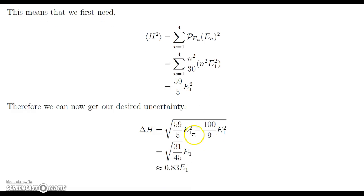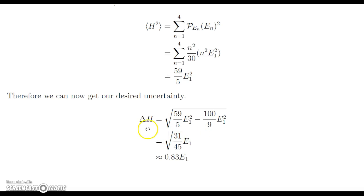Now that we have both these values, we can get our desired uncertainty, which is that the uncertainty is equal to the square root of 59 fifths E1 squared minus 100 ninths E1 squared. We can bring the E1 squared out, factor that out, and get an E1. And then when we collect terms here, we get that the uncertainty is the square root of 31 over 45 times the E1. And this is approximately equal to 0.83 times the ground state E1.